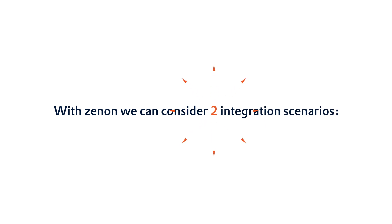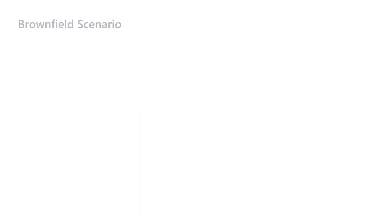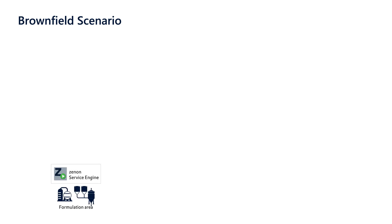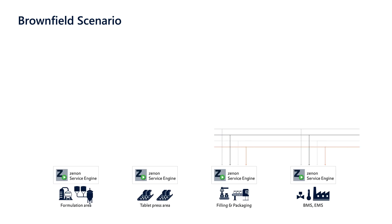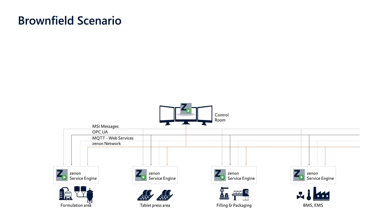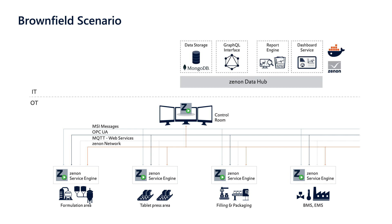With Xenon, we can consider two integration scenarios. Brownfield scenario: integrating existing machines and equipment as an automation integration layer. Through the Xenon software platform, it is possible to implement a modular and scalable middleware that we call the automation integration layer.